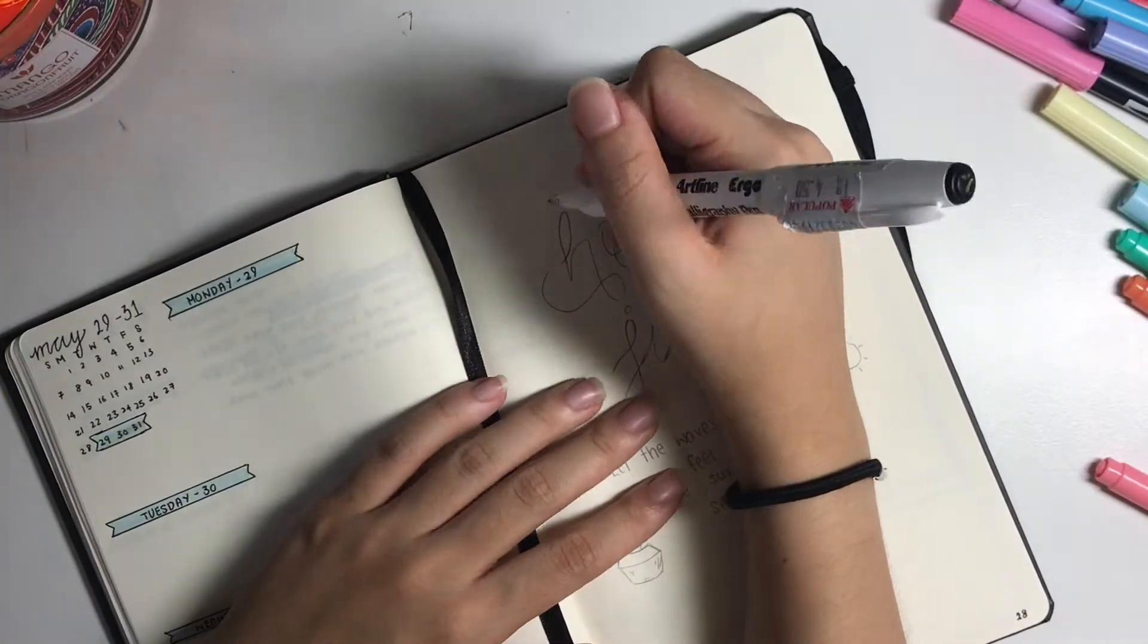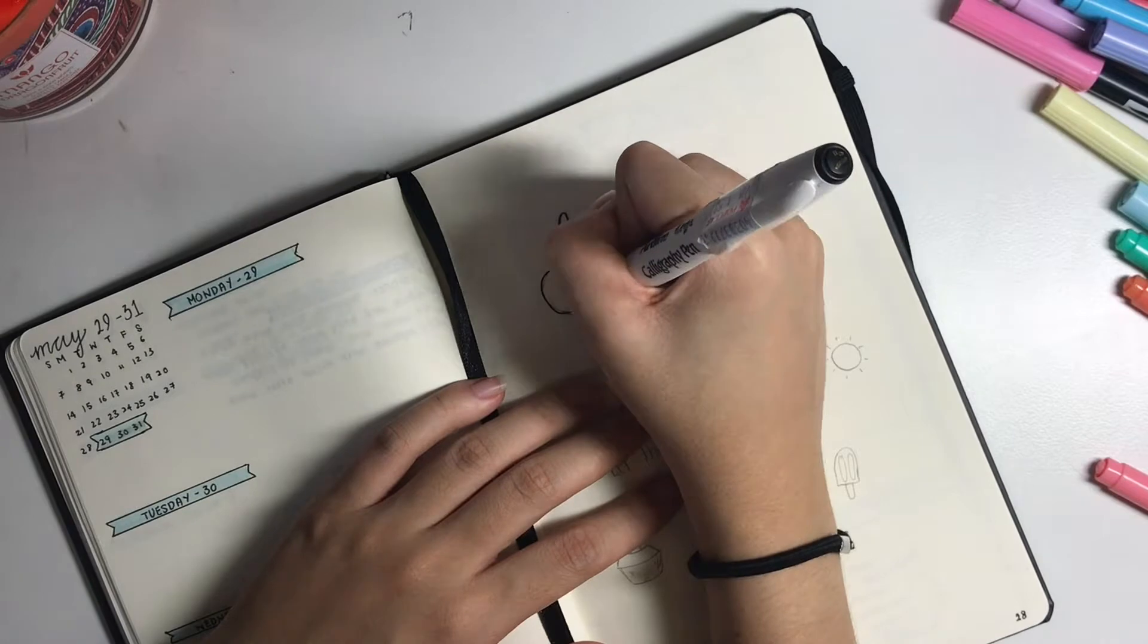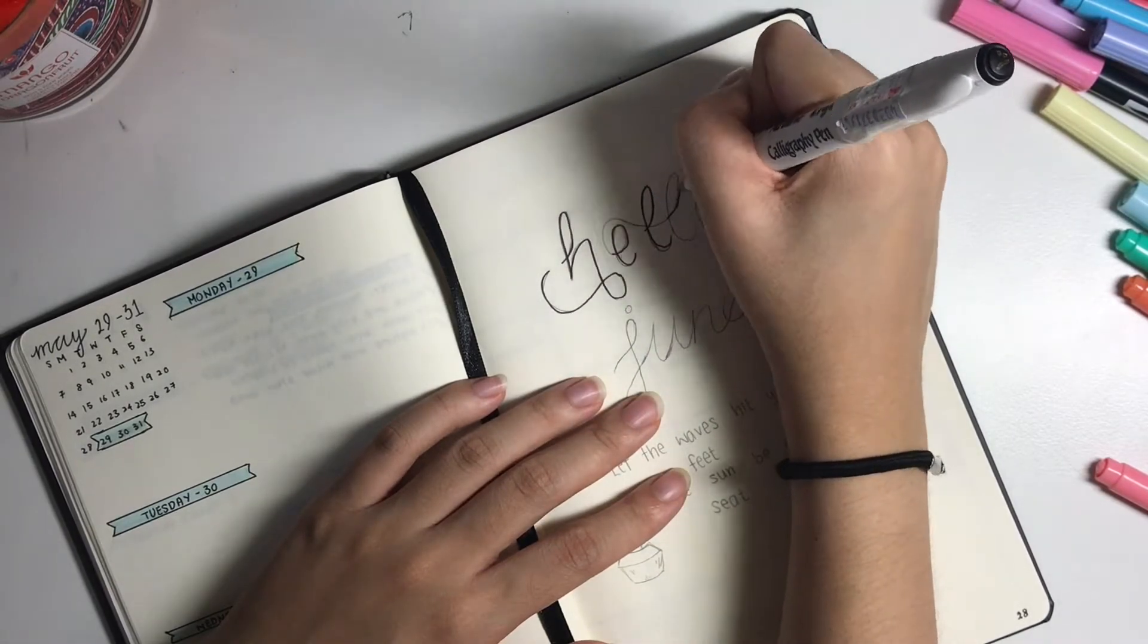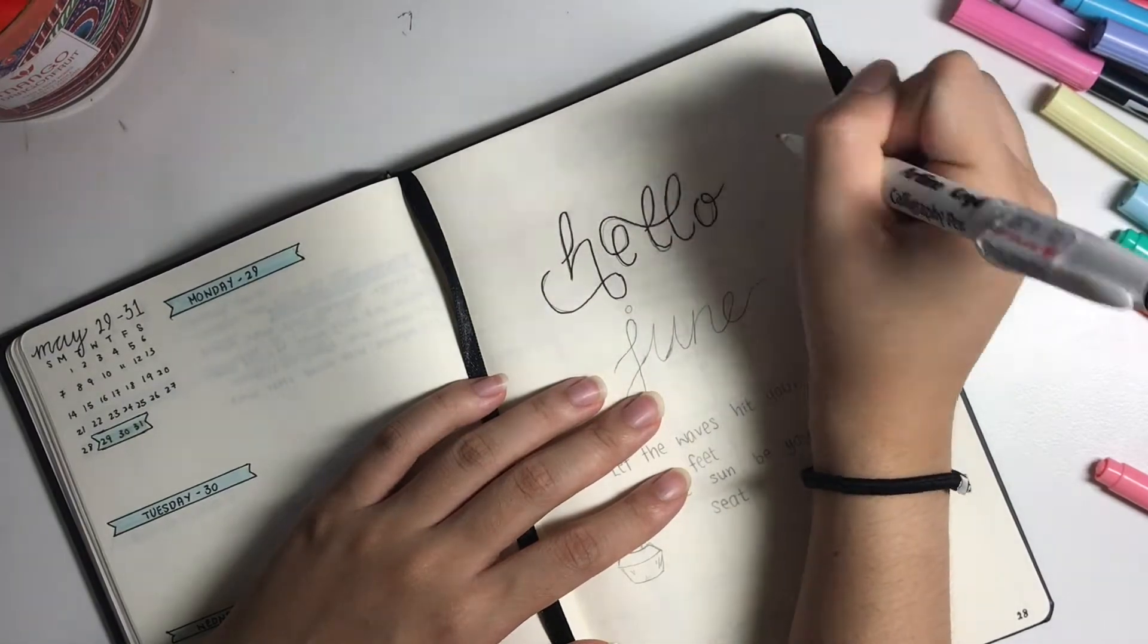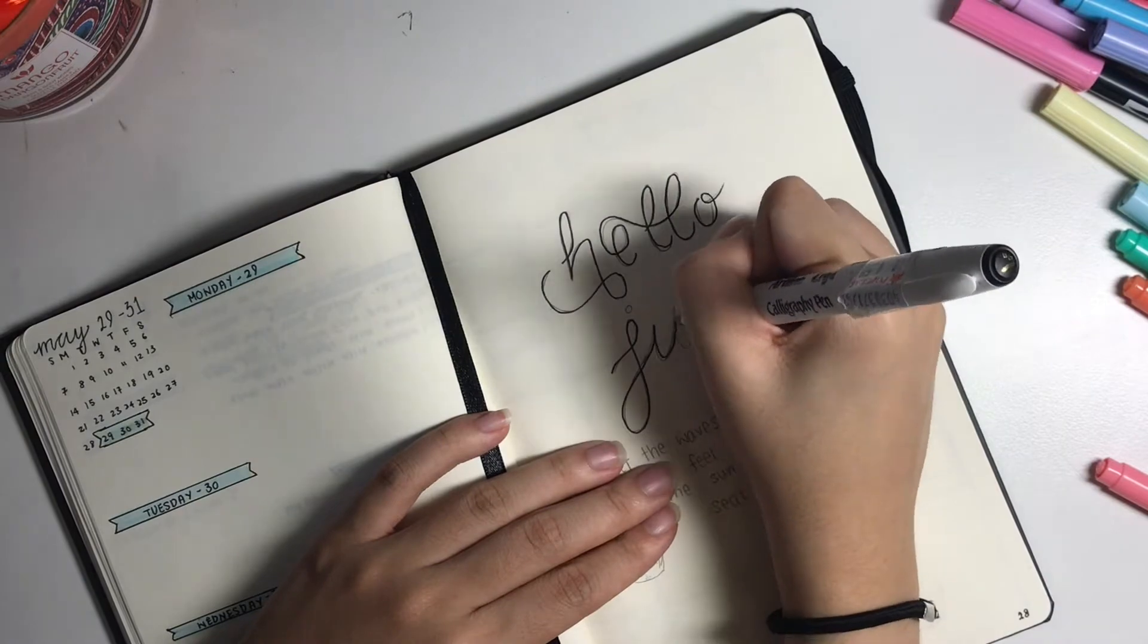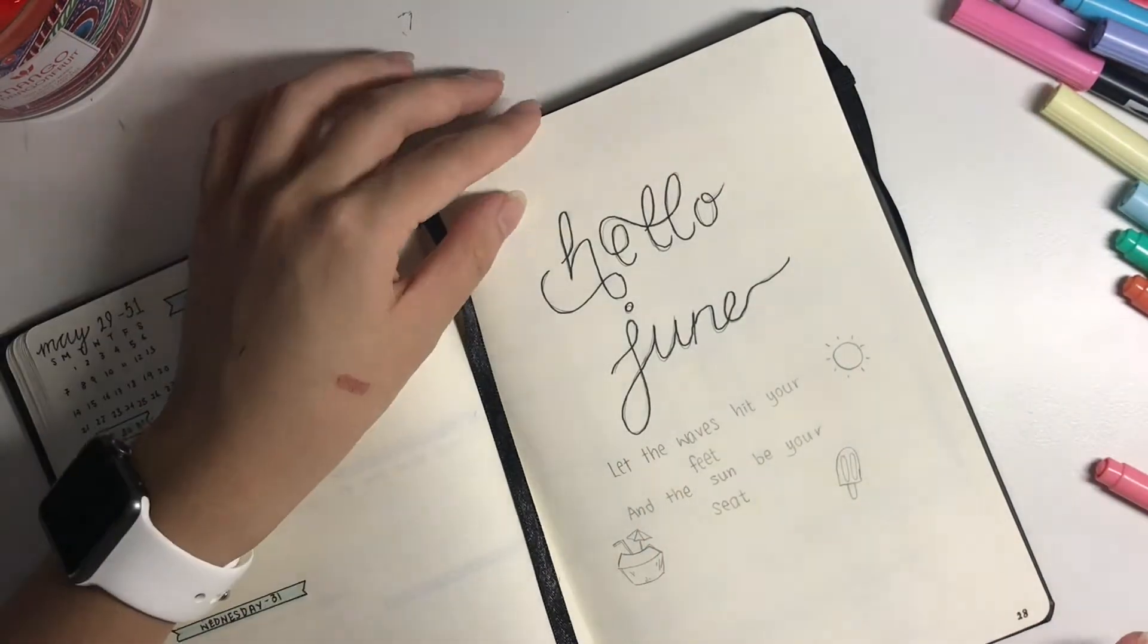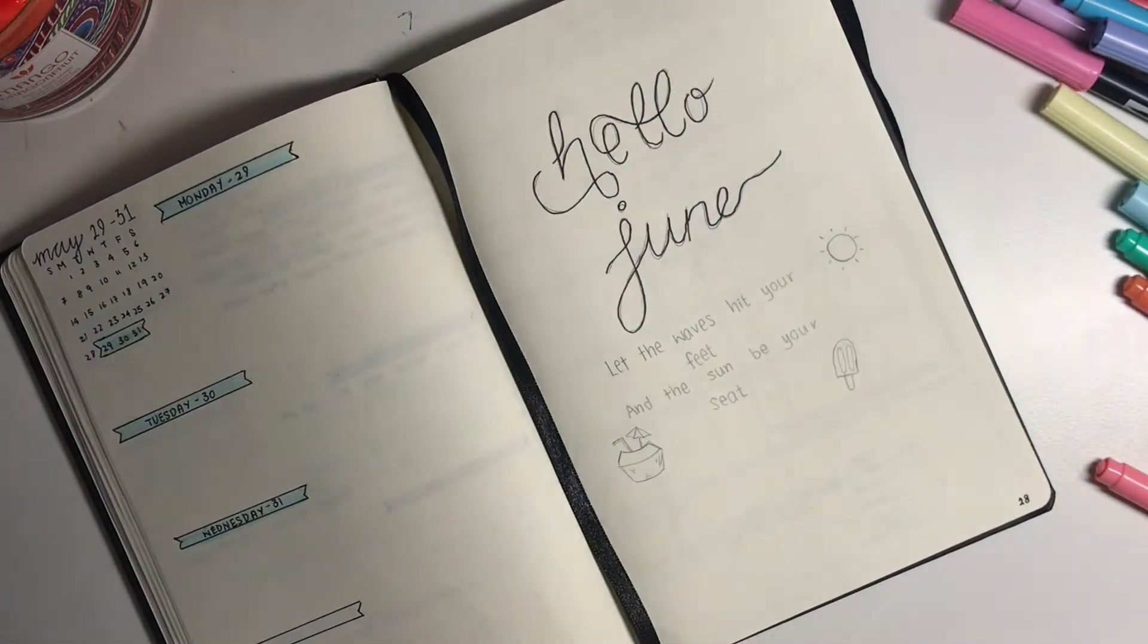Now we're just going to jump right into the June spread. Basically all I did was wrote 'hello June' in a really pretty cursive handwriting. Since summer is right around the corner, I drew little doodles to represent summer themes - so I drew a sun, popsicles, coconut with an umbrella in it. Then I also put a little quote, so it says 'let the waves hit your feet and the sand be your seat.'